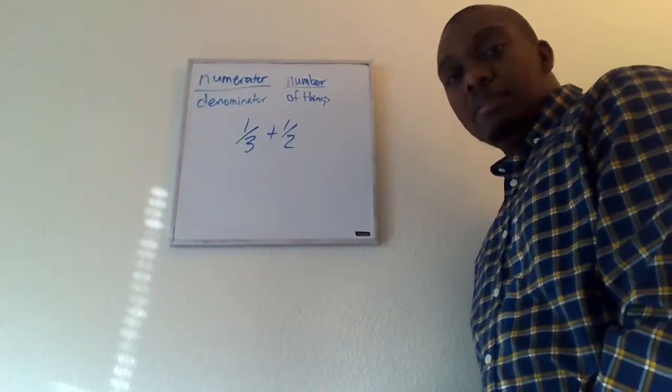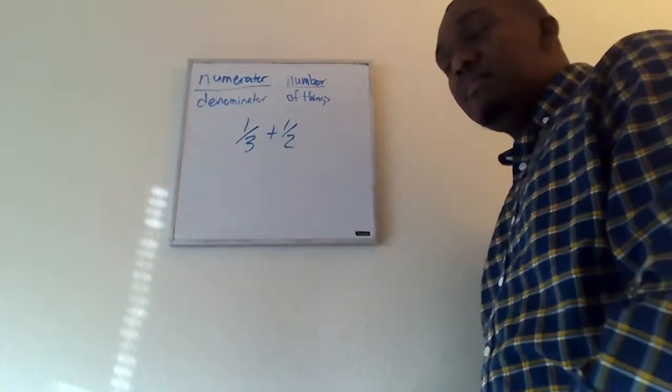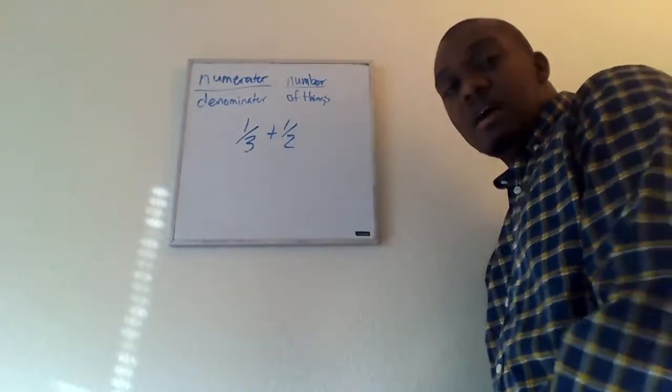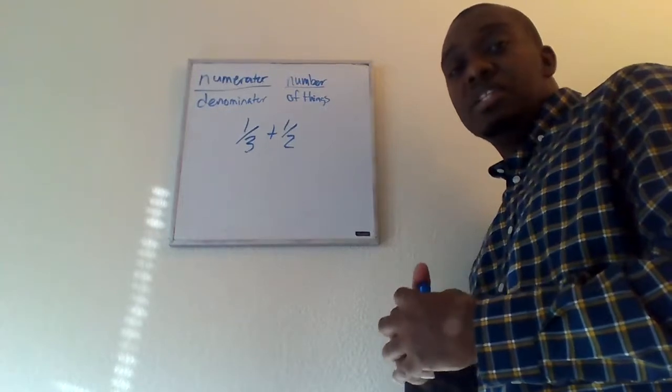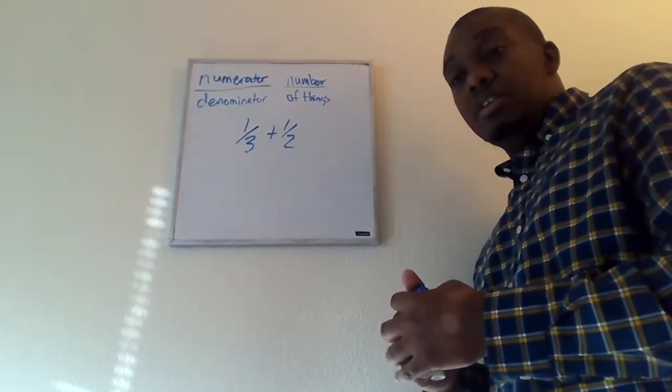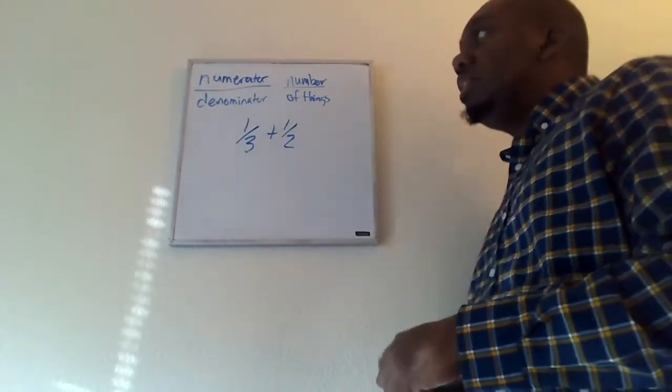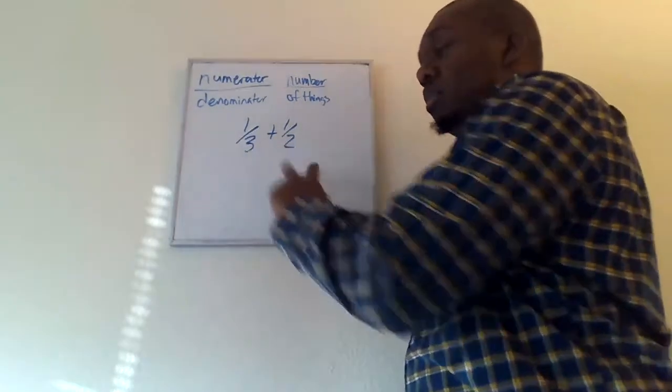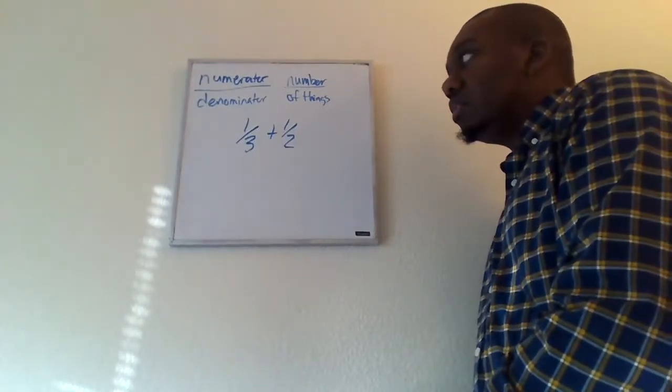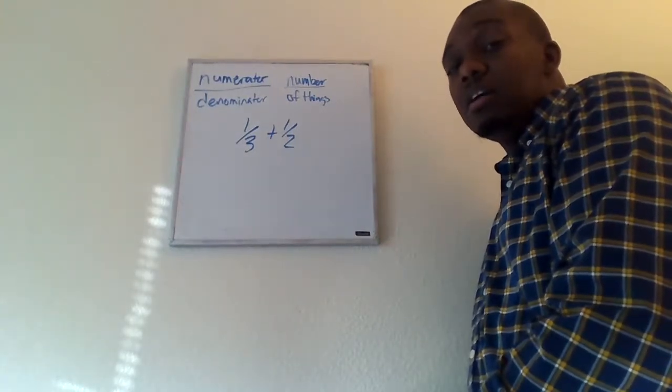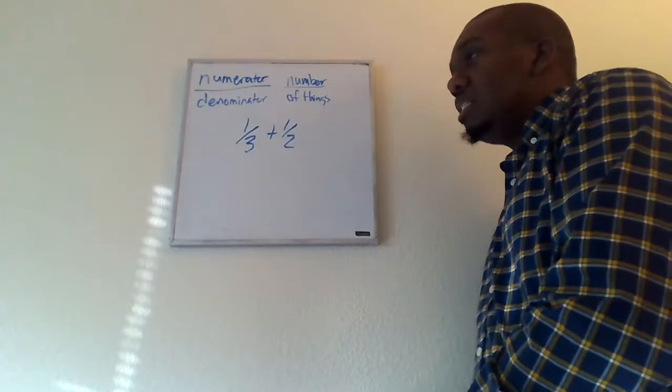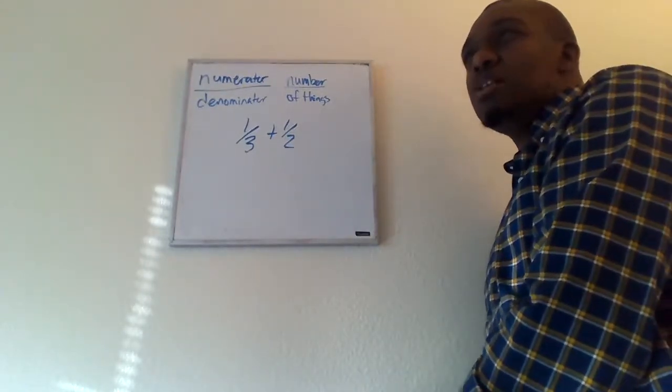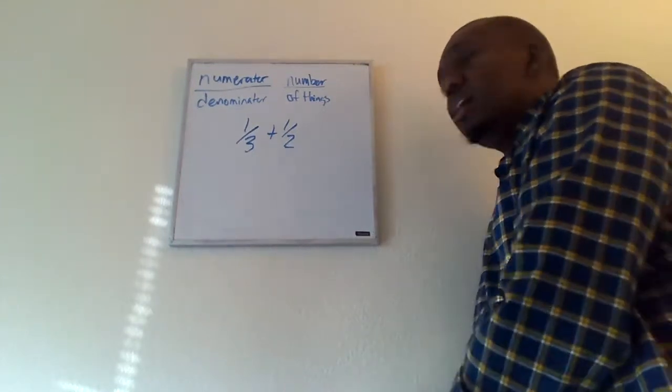We've heard that word before, equivalent, when we talked about equivalent fractions. So we need to find equivalent fractions that would cause these to have the same name. Well, how do you do that? The simplest way is to multiply these two denominators, and that would tell you what the denominator needs to be for the equivalent fraction. Another thing that you can do is find out what is the least common multiple between the two. In other words, what is the smallest number that is in common between these two numbers and they're a factor of it? Well, that sometimes can be a little long or a little take a lot longer to figure out.